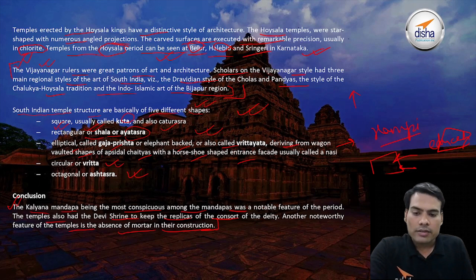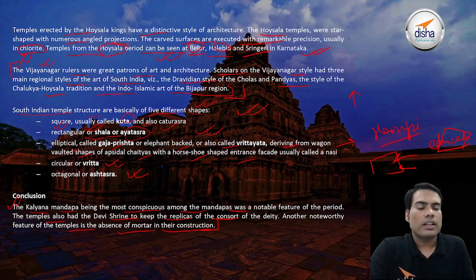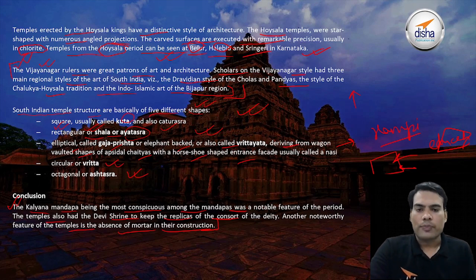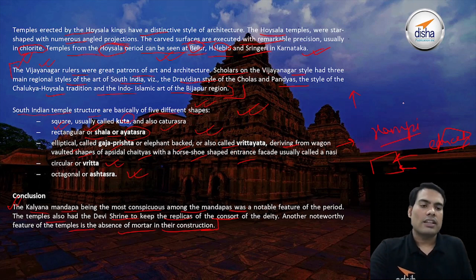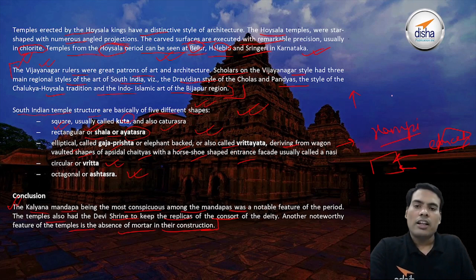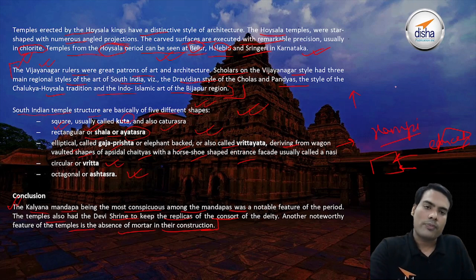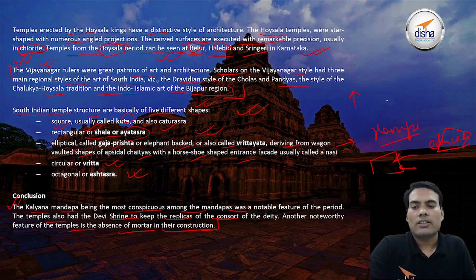The Devi shrine replica was available in almost every South Indian temple, which is a very distinct feature of South Indian temple architecture. The question demanded regional variations in temples of South India — numerous places and the kinds of temples located there have been explained. This is the overall answer for this particular question.